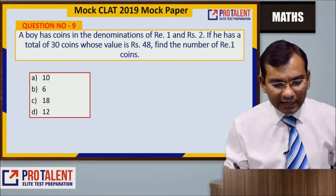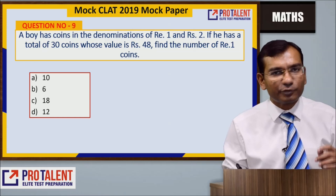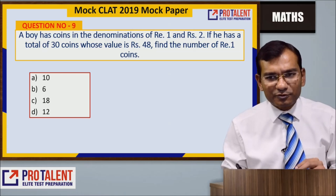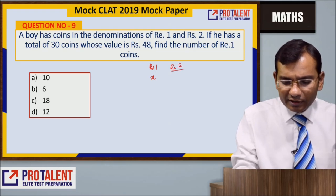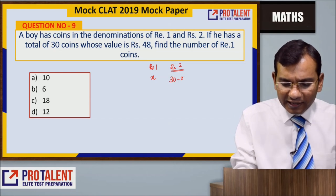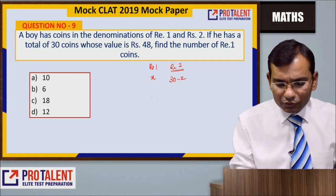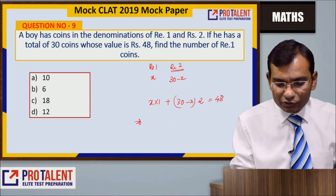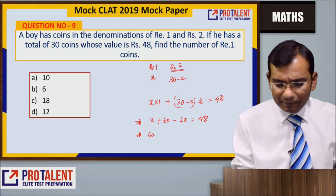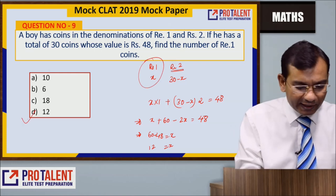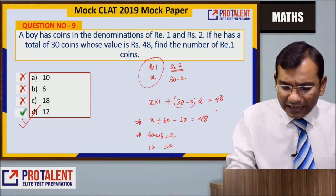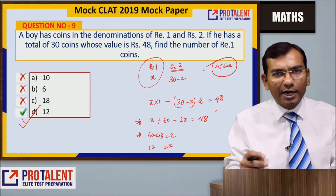Question number 9: A boy has coins in denominations of ₹1 and ₹2. He has a total of 30 coins whose value is ₹48. How many ₹1 coins does he have? Let ₹1 coins = x, so ₹2 coins = (30-x). Then: x×1 + (30-x)×2 = 48. Solving: x + 60 - 2x = 48, so 60 - 48 = x, therefore x = 12. So there are 12 one-rupee coins. This is a very easy, maximum 45-second question.